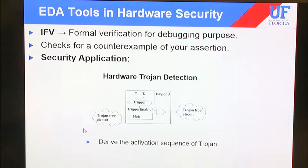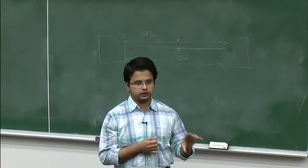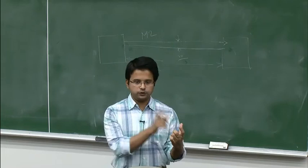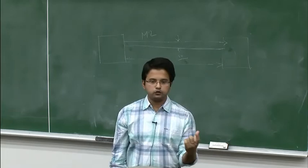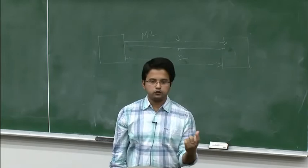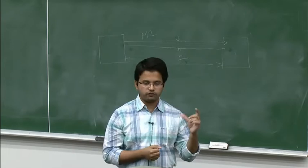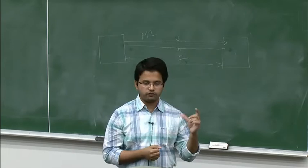JasperGold is used for formal verification and debugging. You can use this tool for Trojan detection. Before going to hardware implementation, you can perform simulation to ease your hardware analysis process. With JasperGold, you apply a condition and the tool will always try to find a counterexample. For example, if you assert that the Trojan trigger is always inactive, the tool will try to find the condition under which the Trojan becomes active — helping you discover the pattern that makes the Trojan trigger.